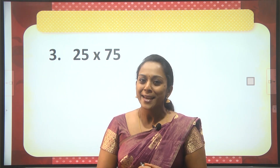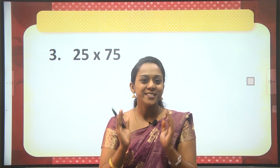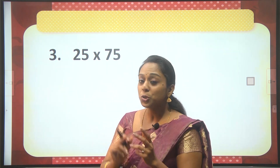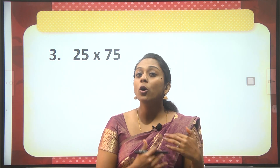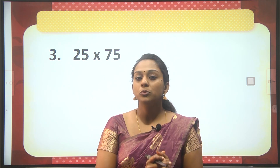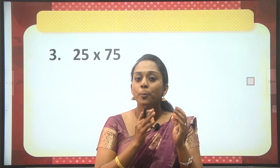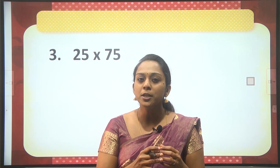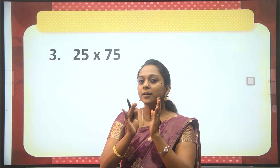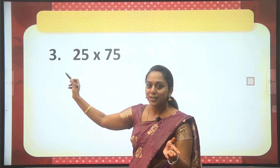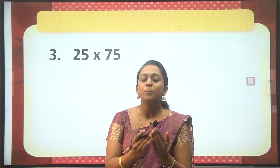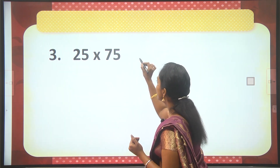Question number 3: 25 into 75. Both numbers end in 5, so focus on the digit just before 5 — here the digits are 2 and 7. Unlike the previous questions where both digits were odd or both even, here we have a combination of odd and even. When it's a combination of odd and even, your product always ends in 75.